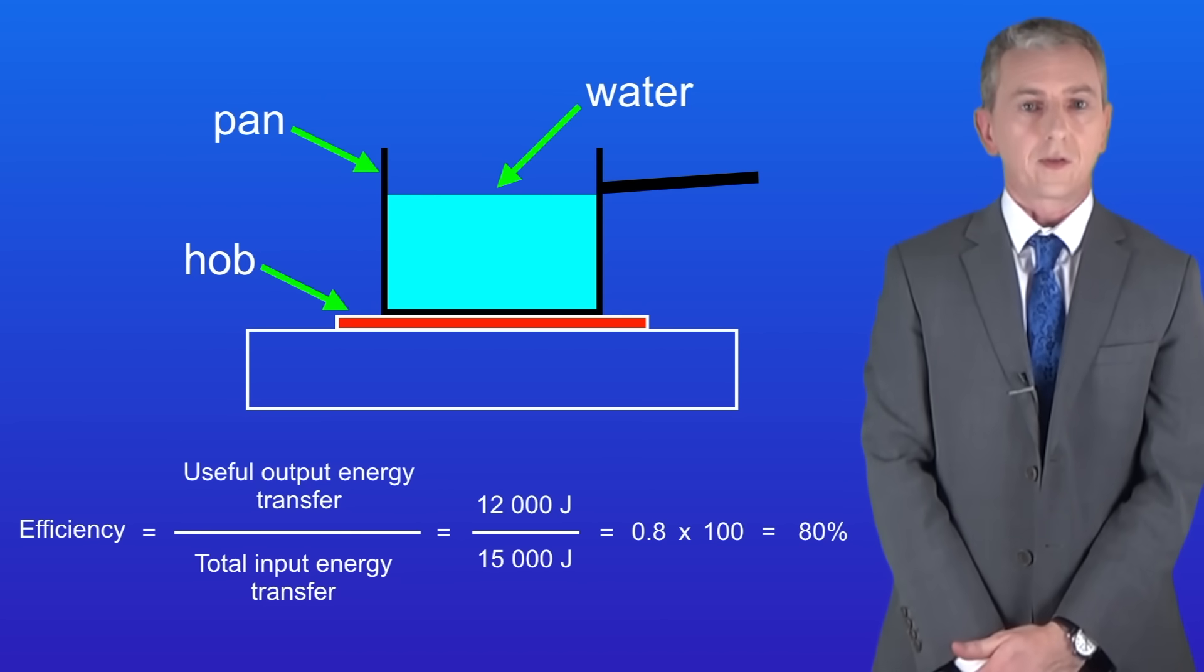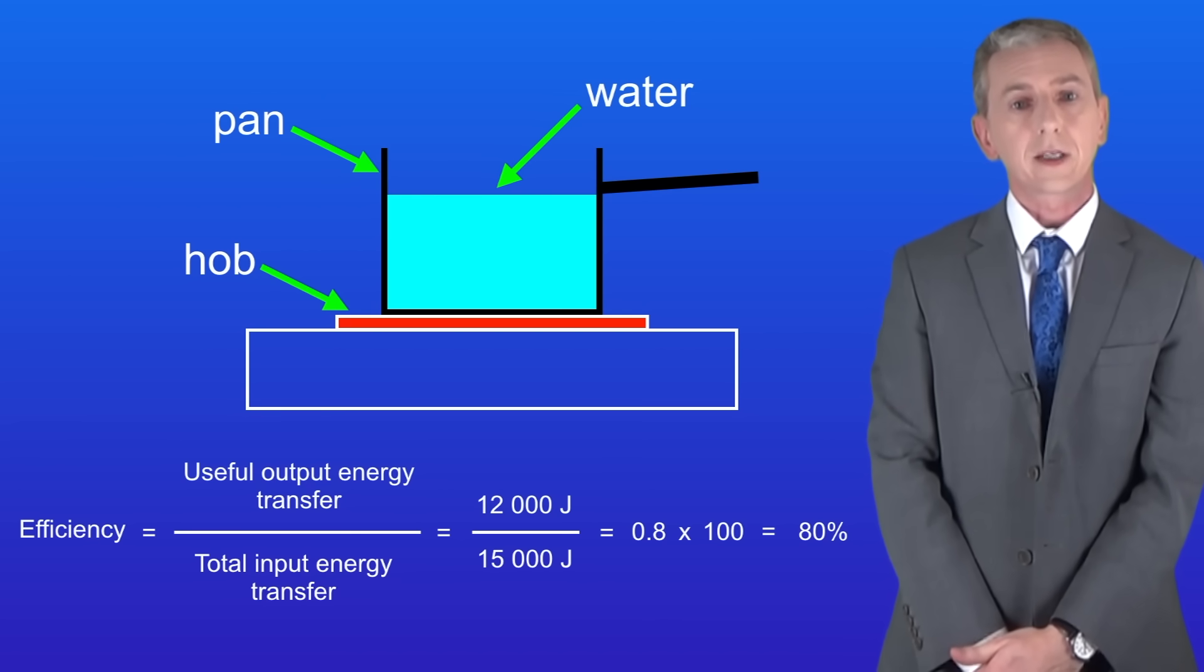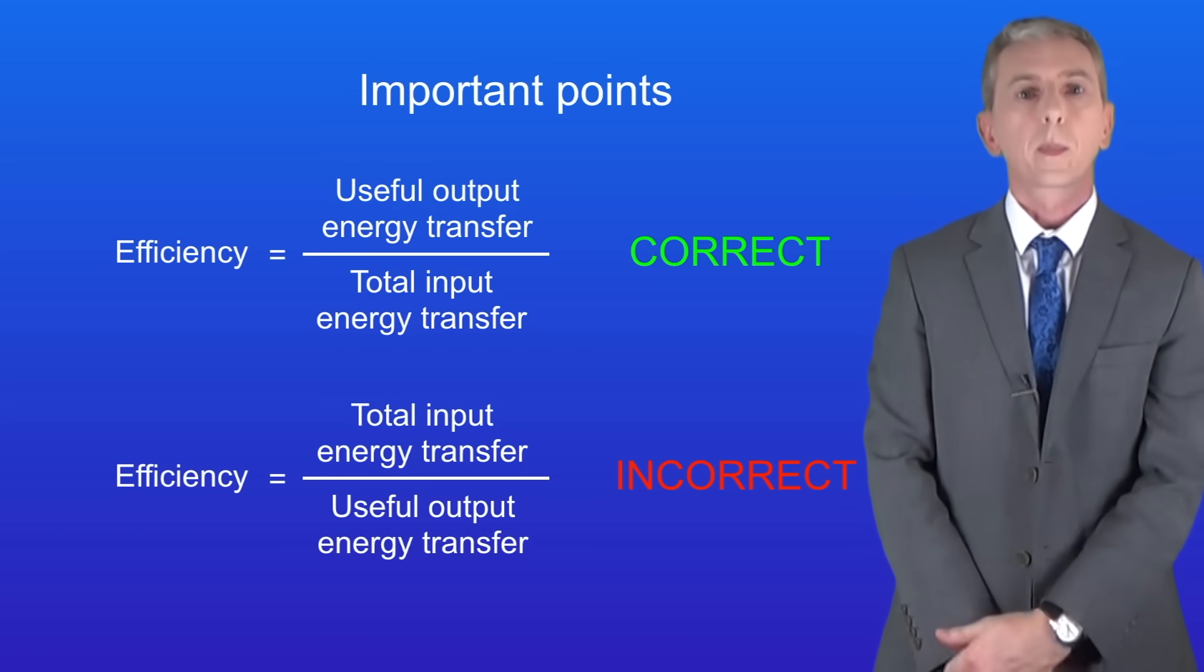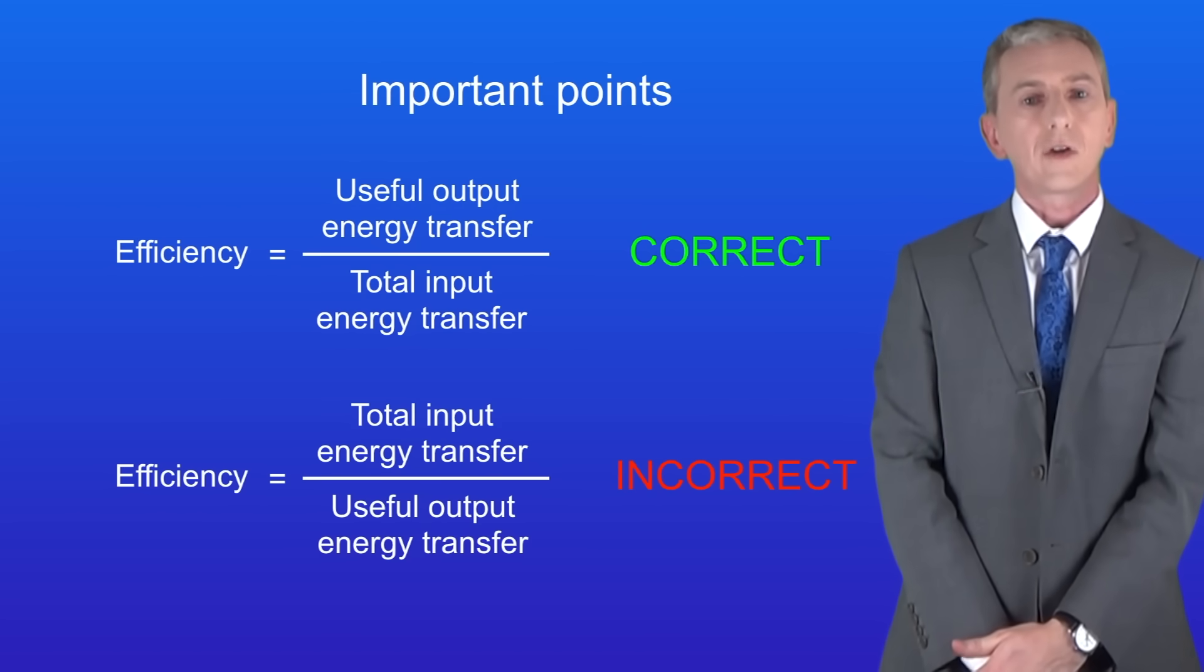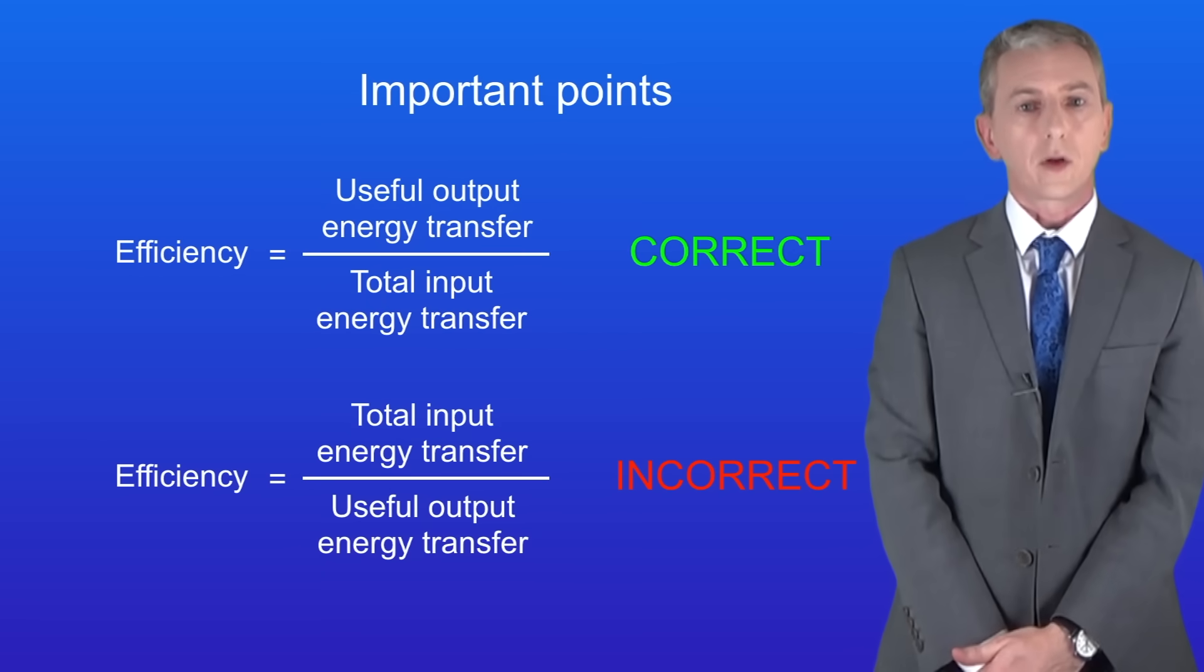The second important point is that most students who struggle with calculating efficiency write the calculation upside down like this. Now you can tell if you've done this because you'll get an efficiency value of greater than 1 or greater than 100 percent and that's just not possible.